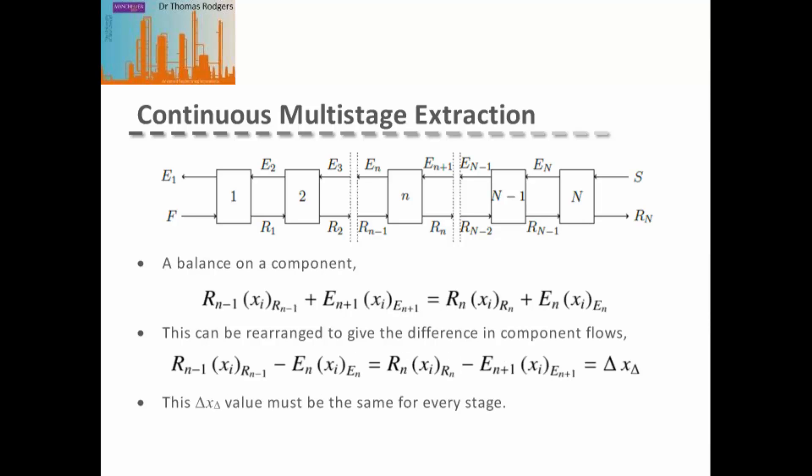We can carry out this same mass balance process for each component in the system. We can again do a general mass balance on stage N and then rearrange this to give the difference in each of the component flows between stage N and the stage above and the stage below. Again, we can see that the difference in the mass flow rate of the component for each stage must be constant.